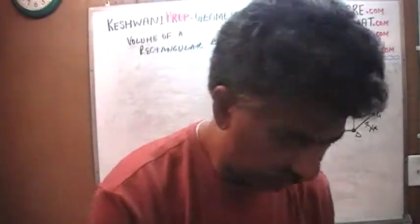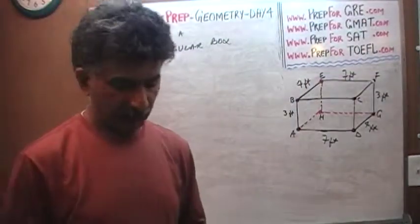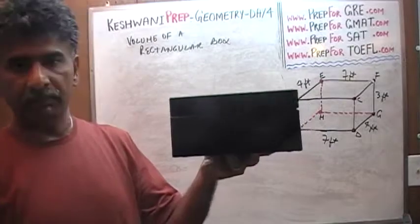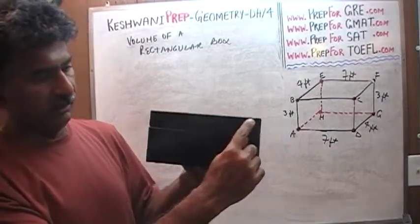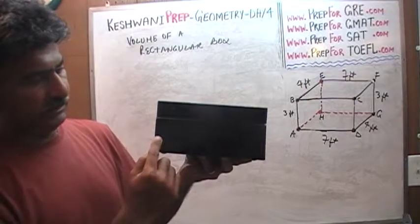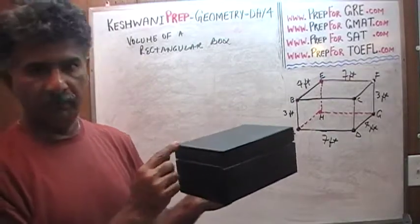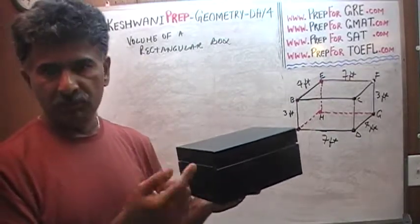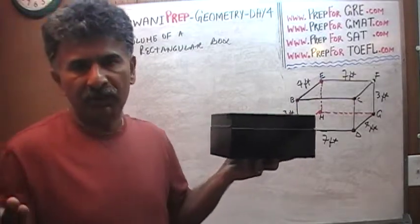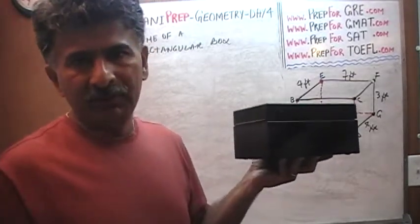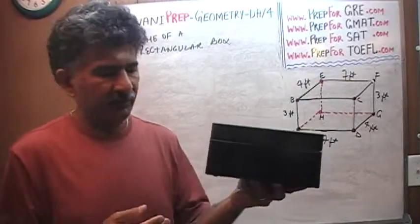Yesterday we talked about figuring out the surface area of a rectangular box, and the same box that I was holding yesterday — here is a rectangular box. As you can see, here is your length, here is your height, and there is your width. Which one you call which doesn't really matter because the three quantities are going to be multiplied, and when you multiply numbers it doesn't matter which one you call what — you are going to get the same results.